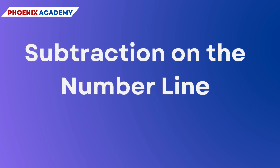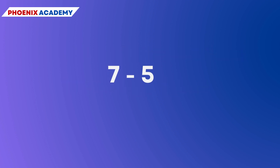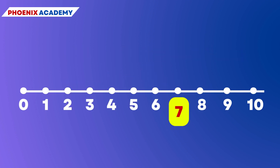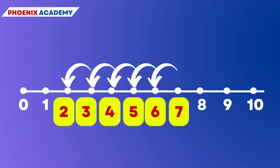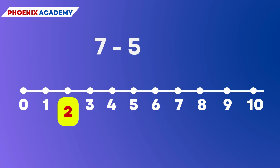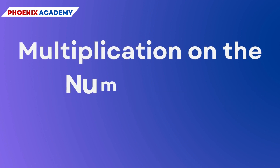The subtraction of two whole numbers can also be shown on the number line. Let us find 7 − 5: start from 7. Since 5 is being subtracted, we move towards the left, making 5 jumps of 1 unit each. We reach the point at 2, so 7 − 5 = 2.